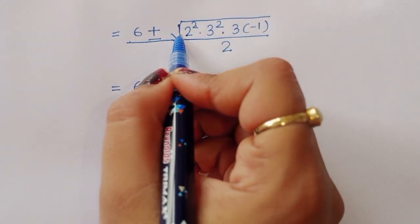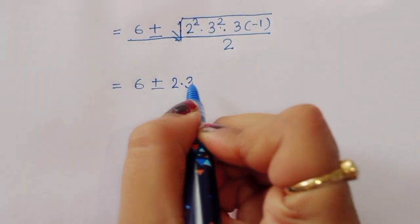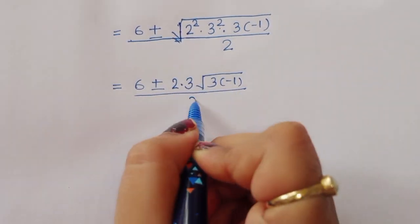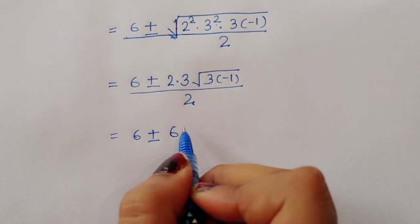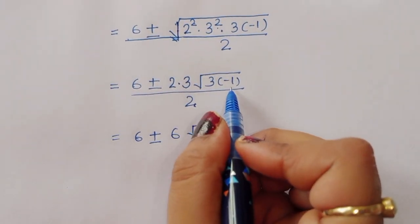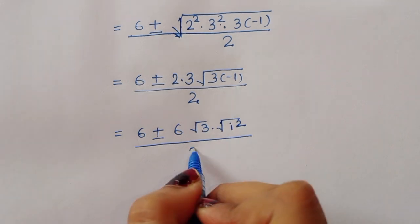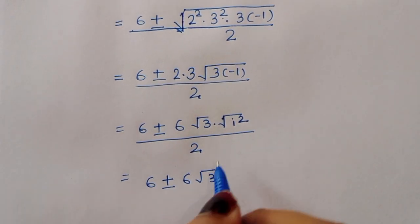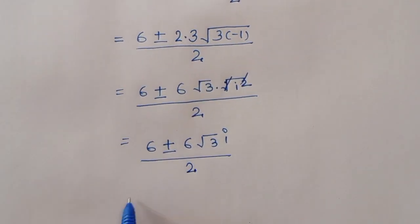Factoring 108: we get 4 times 27, which is 2 squared times 3 cubed. So the square root of minus 108 equals 2 times 3 times the square root of 3 times the square root of minus 1. Since the square root of minus 1 is i, this becomes 6i times the square root of 3.